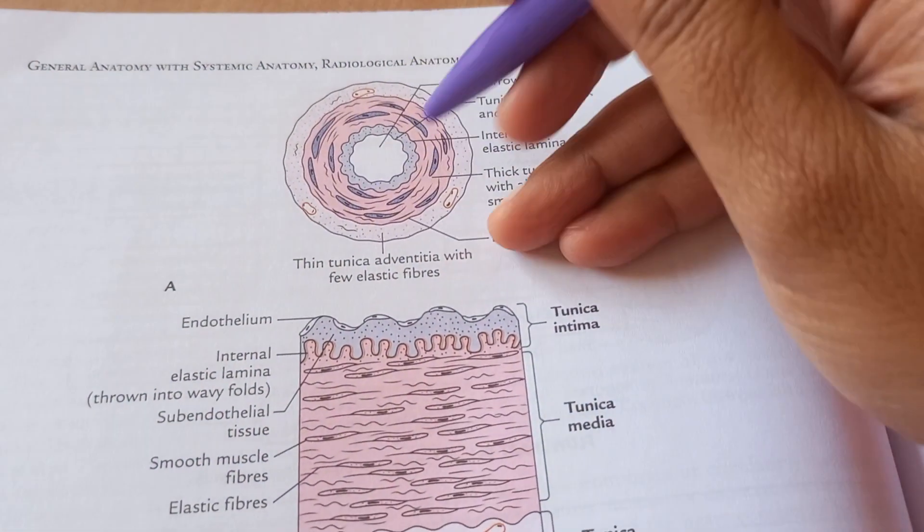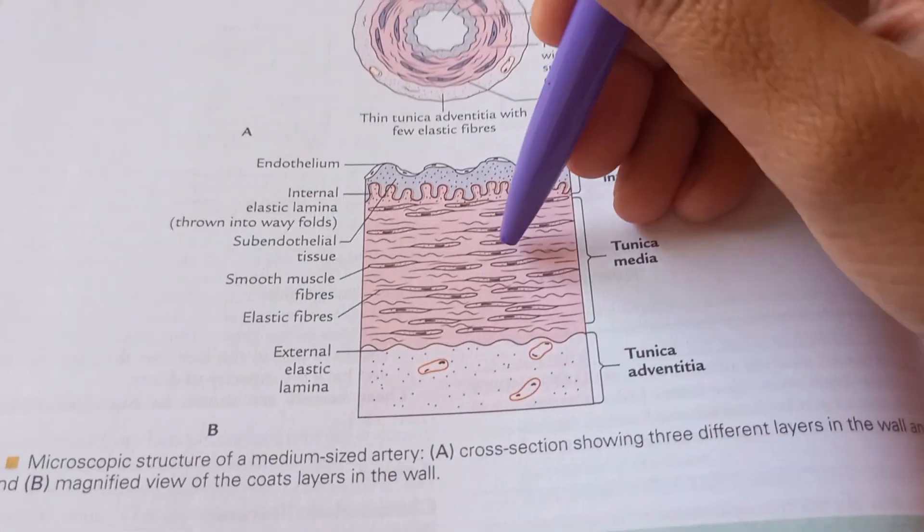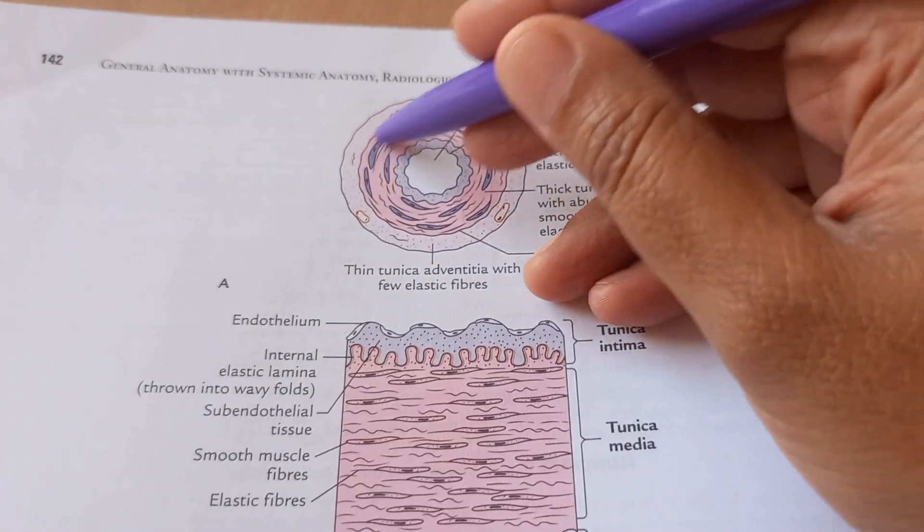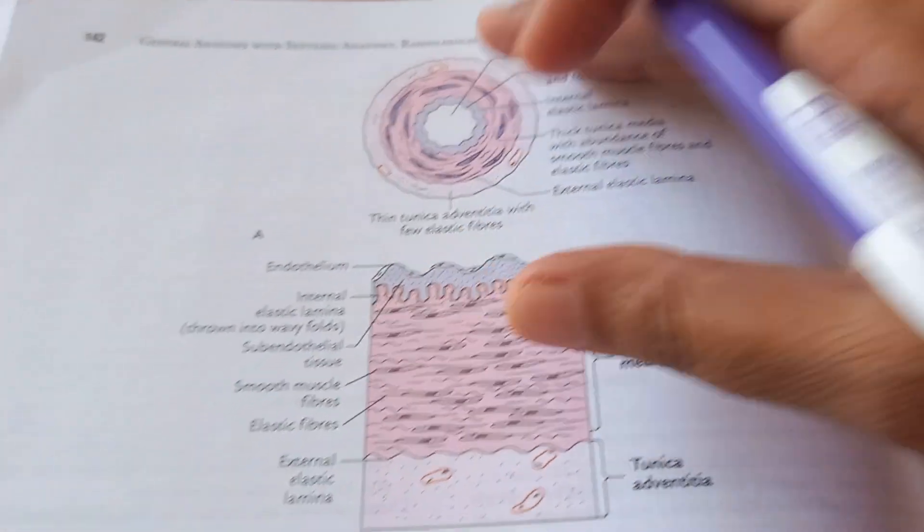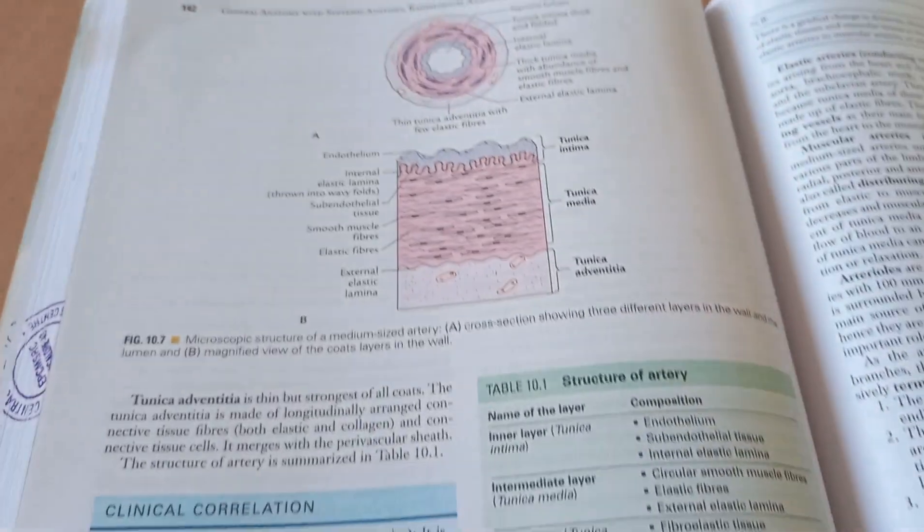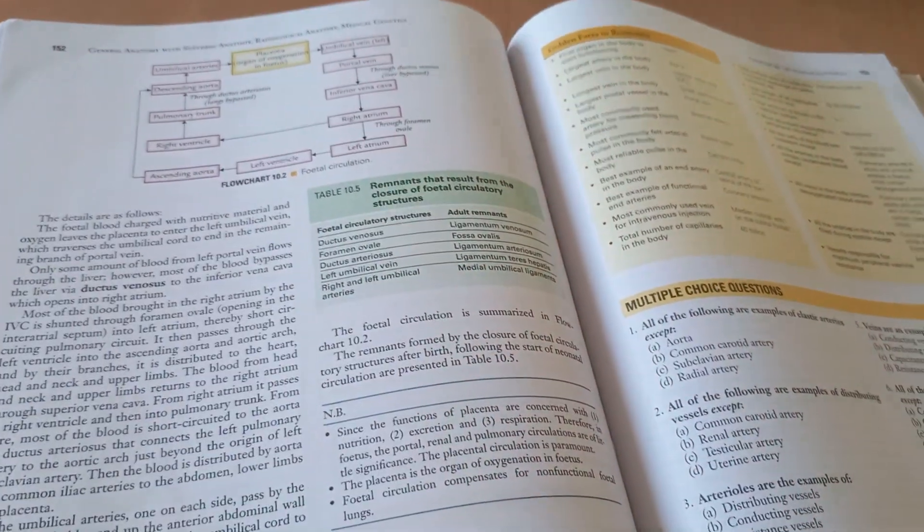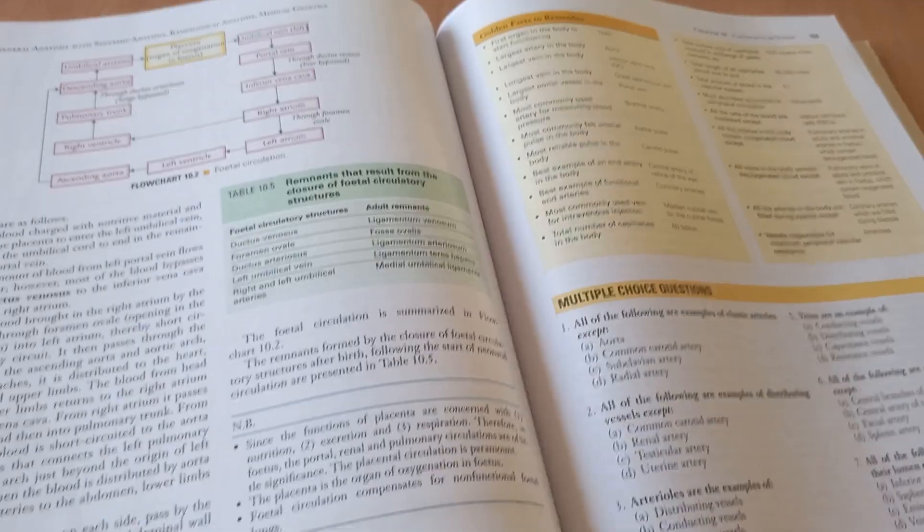Let's look at some other diagrams here. This one is the artery. Yes, a medium-sized artery because there is so much muscle that you can see. So basically, diagrams are very good in Vishram Singh. Otherwise, the content has a lot of mistakes.